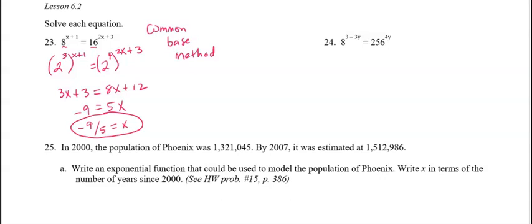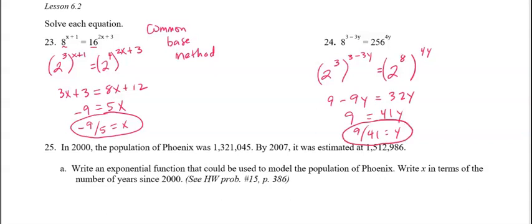Okay. Same thing on number 24. I'm trying to think of a number that I could use as a base to represent 8. Well, I know that's 2 to the 3rd. And that same number, 2, has to be used to write 256. And I believe that's 2 to the 8th. Yep. So 2 to the 8th power. And now you've got the common bases established. You just let the left exponent, which is going to be 9 minus 9y, equal the right exponent, which is going to be 32y. So I'm going to add 9y to both sides. And then divide by 41. And there's our answer for number 24.